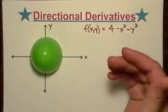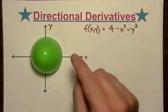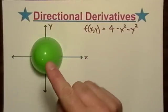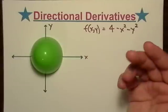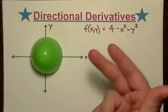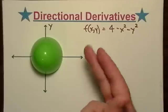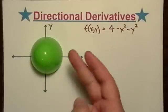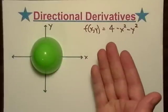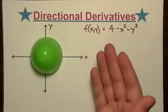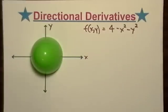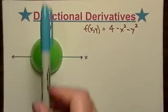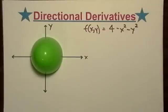Recall from partial derivatives: if I was taking the partial derivative of this function with respect to x, it would give me the rate of change over the x-axis — it wouldn't incur any change in y because I'm not going that way, I'm only going this way. And likewise with y.